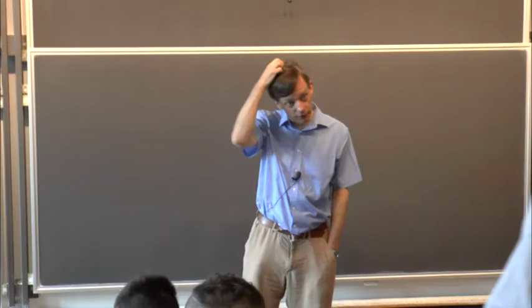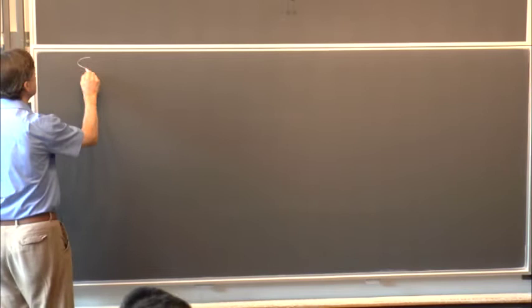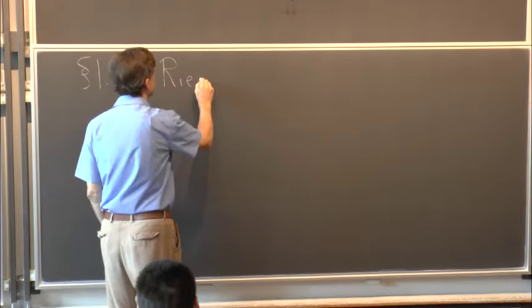I'll start off by telling you a little bit about Riemannian geometry and Riemann curvature, and then some bits about Lie groups, principal bundles, and G-structures if I can fit them in. In the second lecture we'll go on to define holonomy groups and start thinking about their basic properties. So let's have section 1.5 on Riemannian geometry.